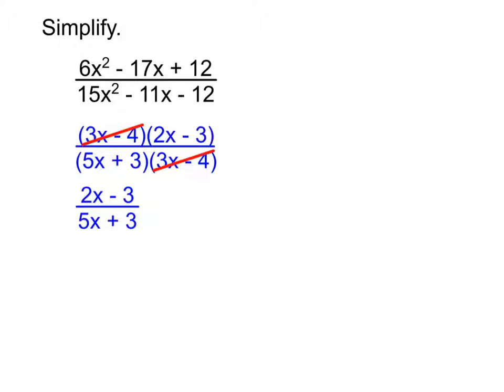For the same reason, we cannot cancel out the x's here — this is as good as it gets. Now if we want to be very particular, we would also include restrictions. Yes, that is the simplified form, provided that x does not equal negative 3/5 or 4/3.